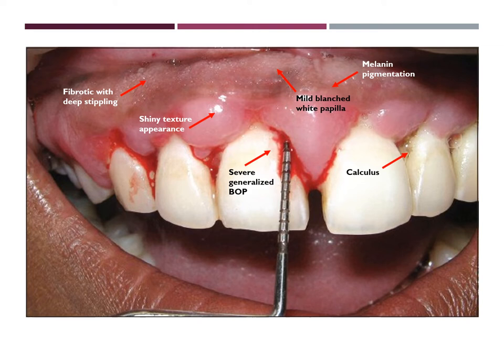In this other gingival image, you can clearly see the bleeding upon probing, which is severely generalized based on the periodontal assessment. You can also see more deep stippling and this shiny texture. In this particular image, you can also see more melanin pigmentation as well as calculus deposits.